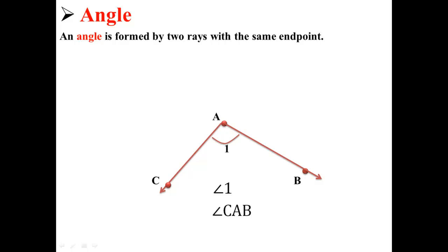Remember that angles are formed by two rays that have the same endpoint. Here we have rays AB and rays AC connected at endpoint A to form an angle. We call this angle angle 1 or angle CAB or even angle BAC.